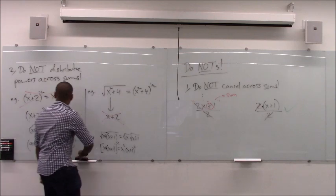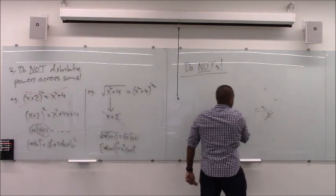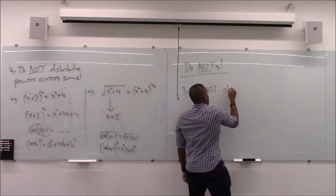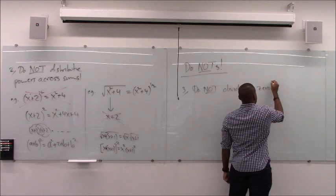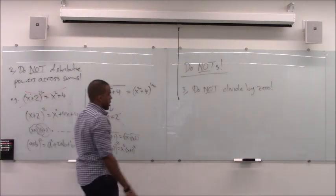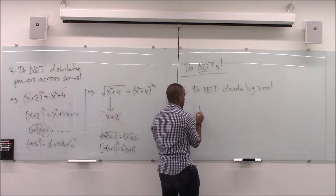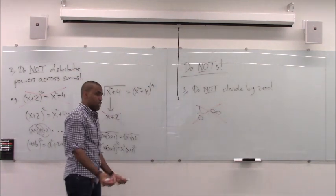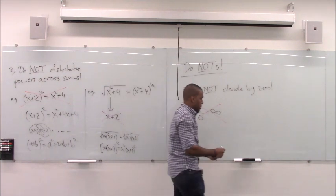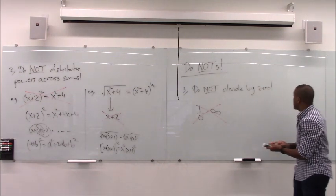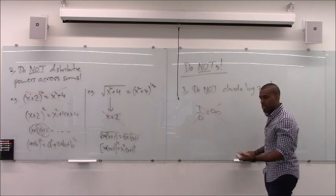The third blasphemy: do not divide by zero. It doesn't make any sense. We'll talk about limits where it might seem like we're dividing by zero, but we're not. If you write 1/0 = infinity, that's wrong — 1/0 is completely meaningless and is gibberish. You cannot have zero in a denominator at any time. If you end up with zero in the denominator, you either did something wrong or the problem has no solution.